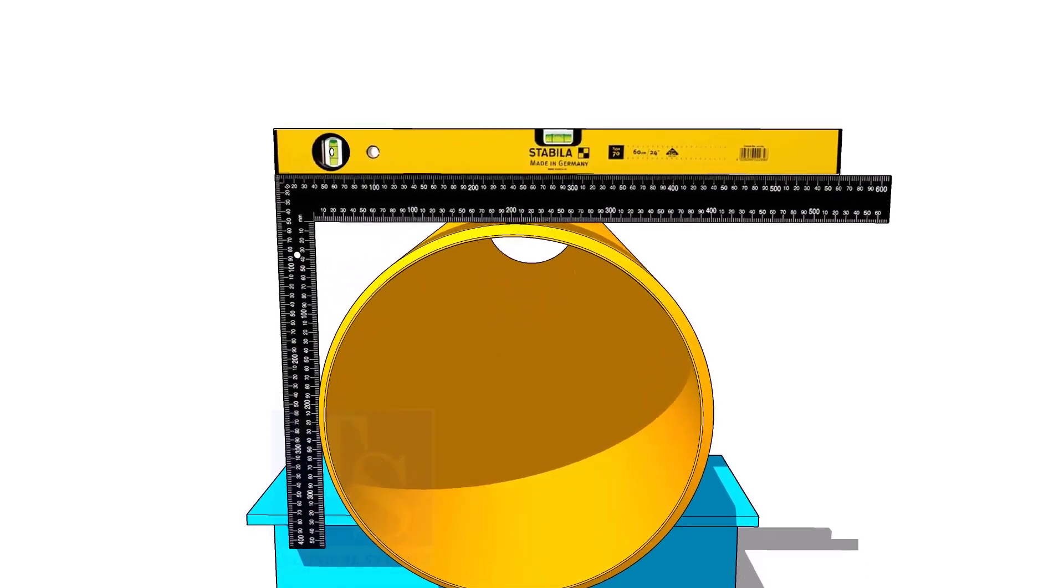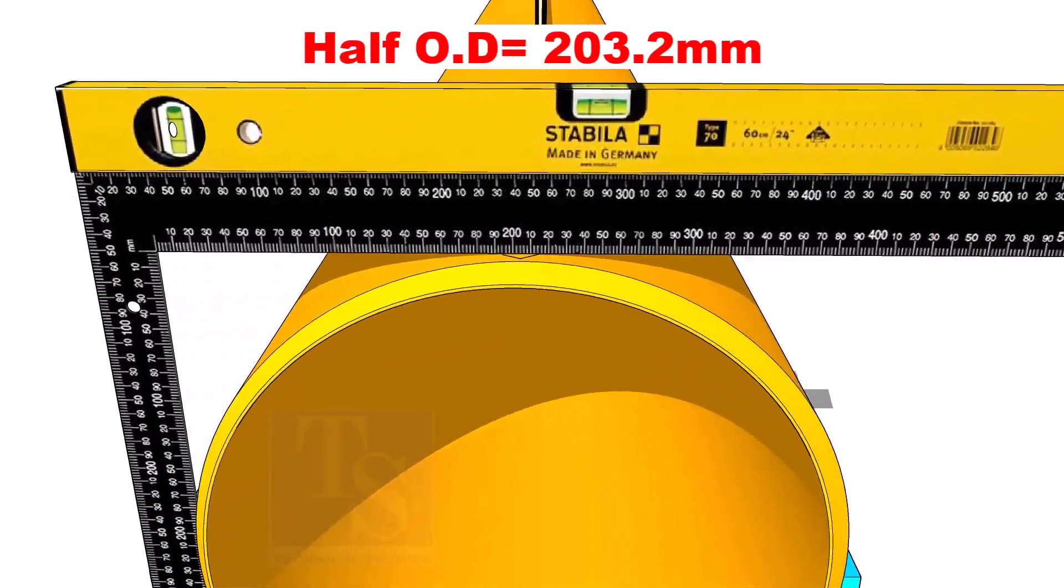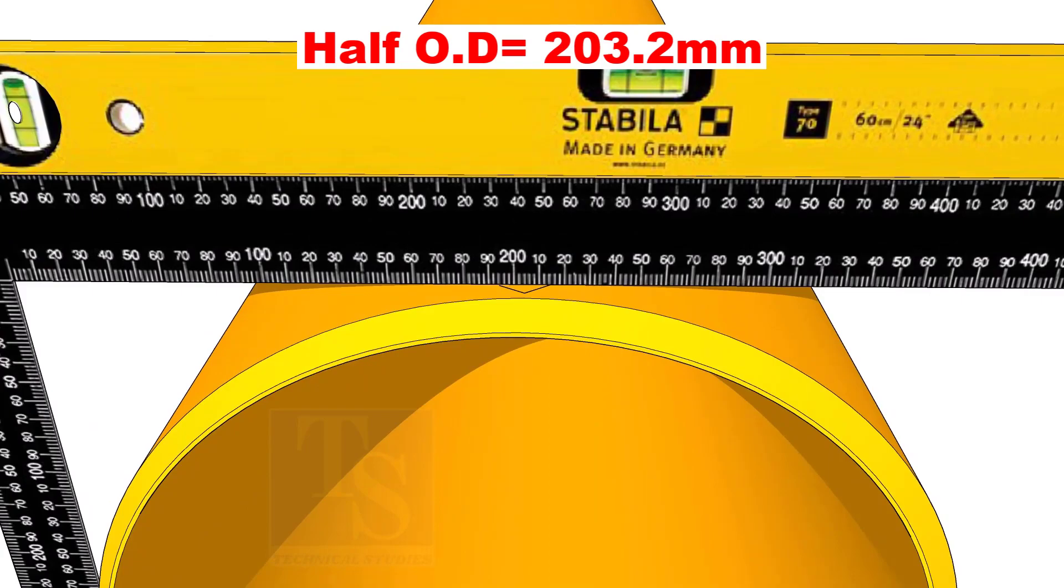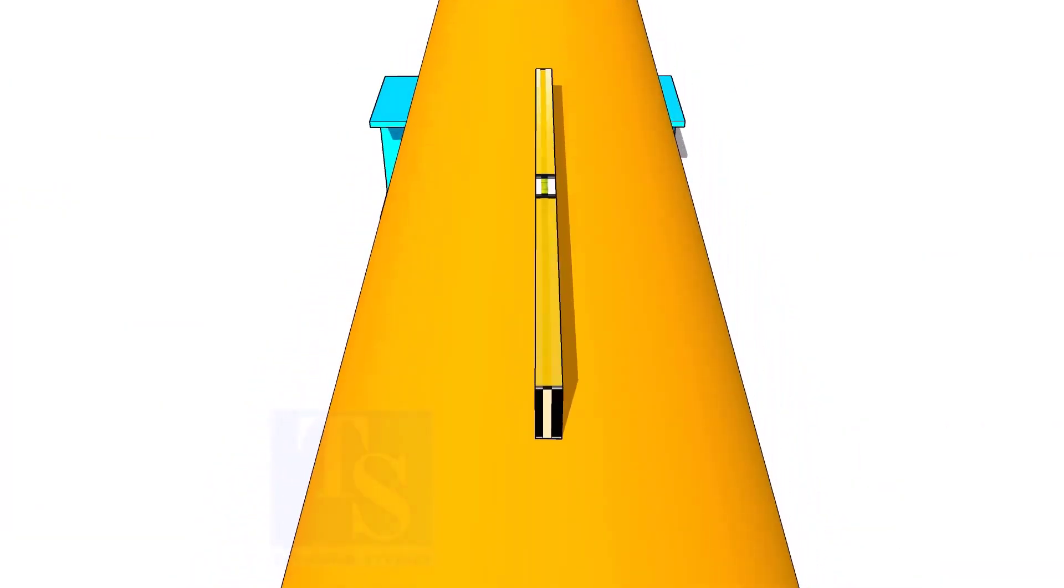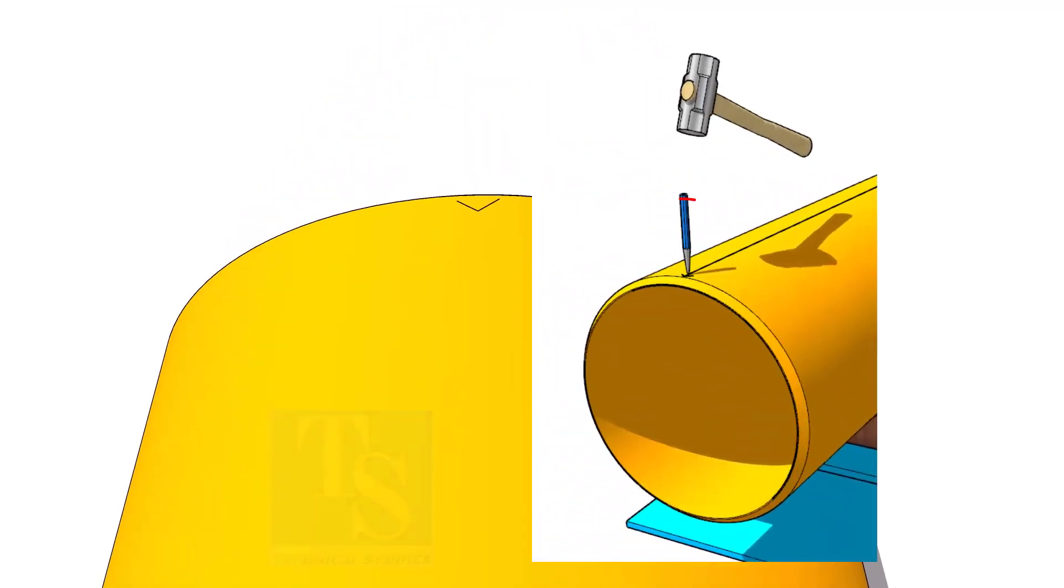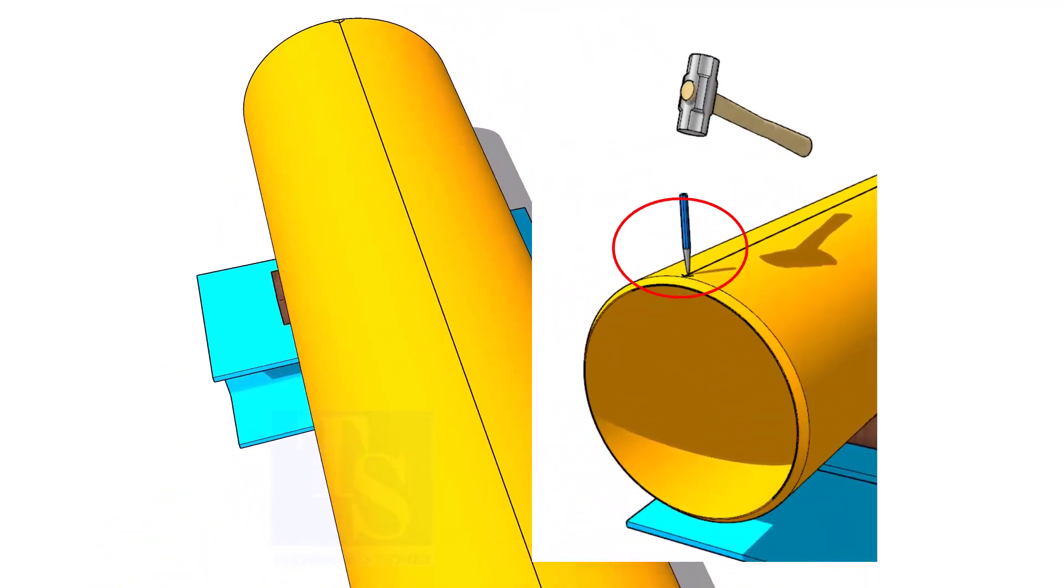Mark the half OD on the top of the pipe. Don't forget to cross-check from the opposite side. Mark the center of the other end of the pipe and draw a line. If required, punch mark the line ends.